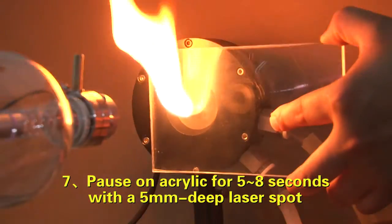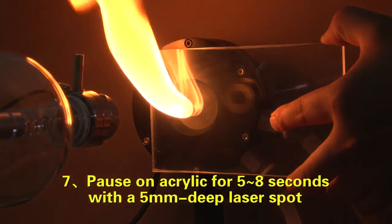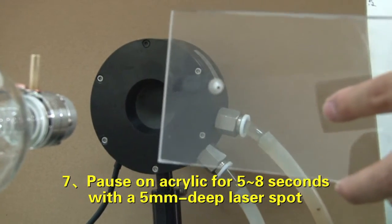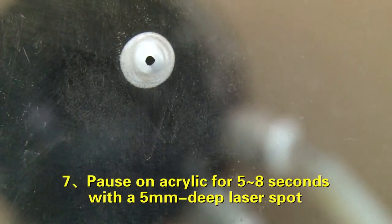Finally, please take a video at 30-200 mm from the output lens without any reflector and pause on acrylic for 5-8 seconds with a 5 mm deep laser spot. Please shoot laser spots on both sides.